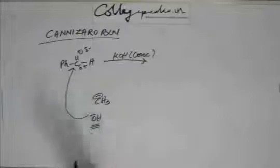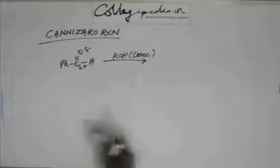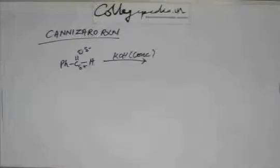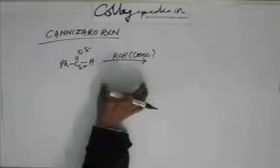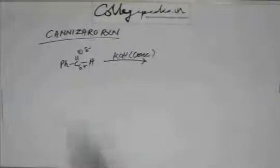So dilute KOH cannot go and attack C double bond O because it is a base, it is not a nucleophile. And the greater discussion we had when we studied the difference between base and nucleophile. But for time being, just to stick to the conclusion of the discussion we had before, dilute KOH is a base, it is not a nucleophile. So it cannot go and attack C double bond O, it can only abstract H plus. This compound does not have acidic hydrogen. So dilute KOH can do nothing to benzaldehyde.